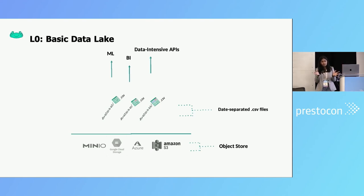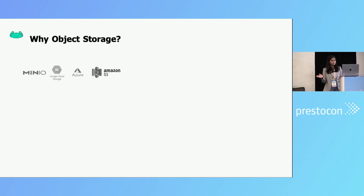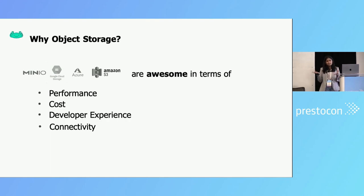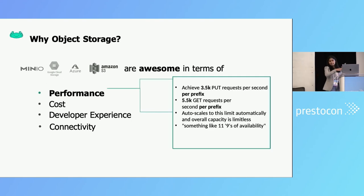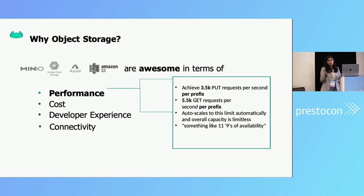This is a basic data lake we're all familiar with. Now, why object store? Because they are great in terms of performance, cost, developer experience, and connectivity in terms of different tools. I don't have to go into detail on these things because we're all data practitioners here. We understand how these object stores are efficient for storing these huge swaths of data coming in.